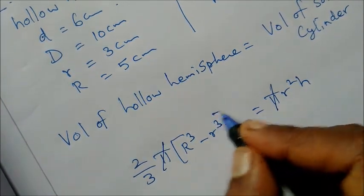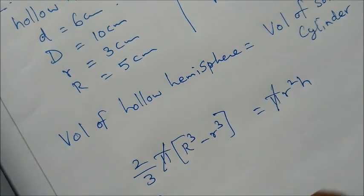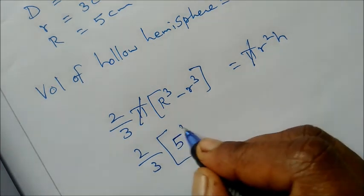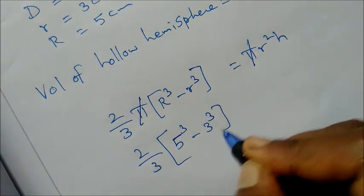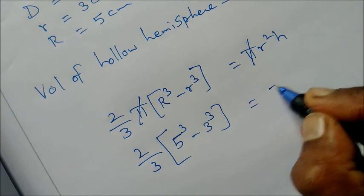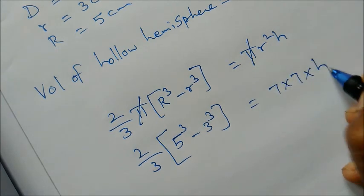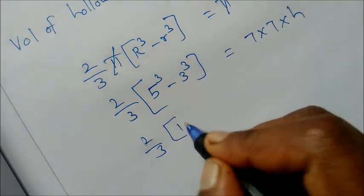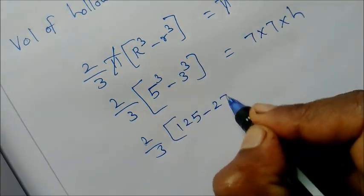Pi cancels. Now we substitute. Capital R cube for hollow hemisphere is 5 cube minus 3 cube, and here 7 into 7 into h.